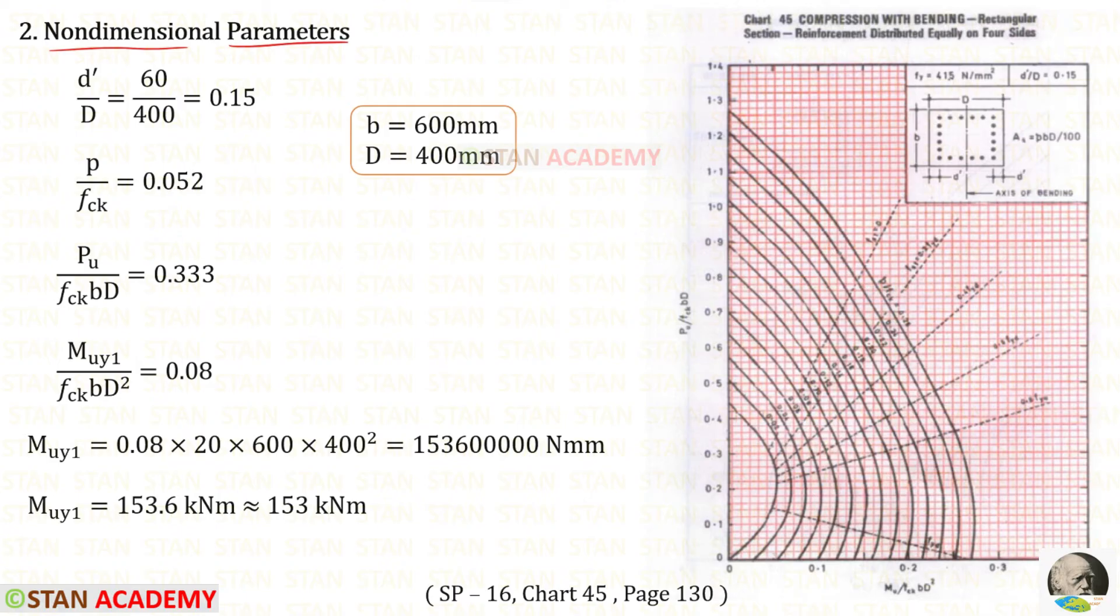Here, we have to be very careful. We have to interchange b and D. In the previous step, D was 600 and b was 400. But now, b should be 600 and D should be 400. For d' upon D, we will get 0.15. Now, let us open the chart 45.